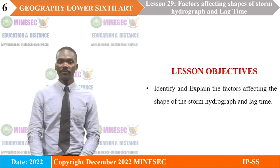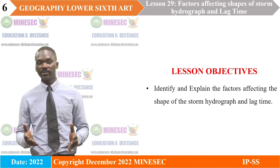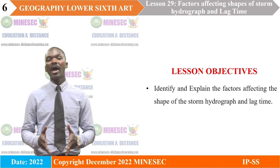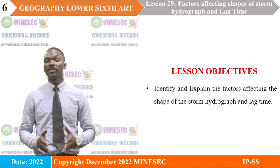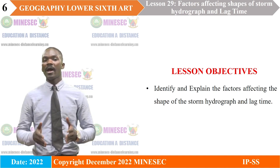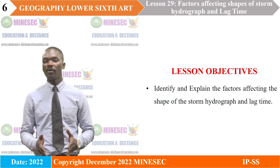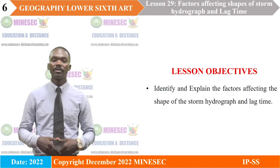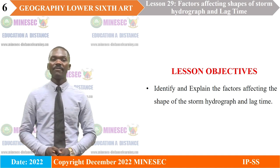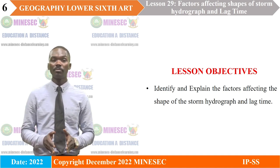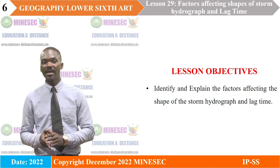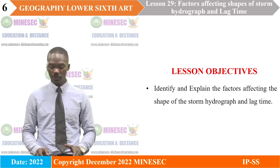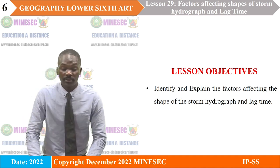Our lesson objectives: at the end of this lesson, the learners are supposed to be able to identify and explain the factors affecting the shape of the storm hydrograph and lag time. You should be able to identify and explain these factors at the end of the lesson.